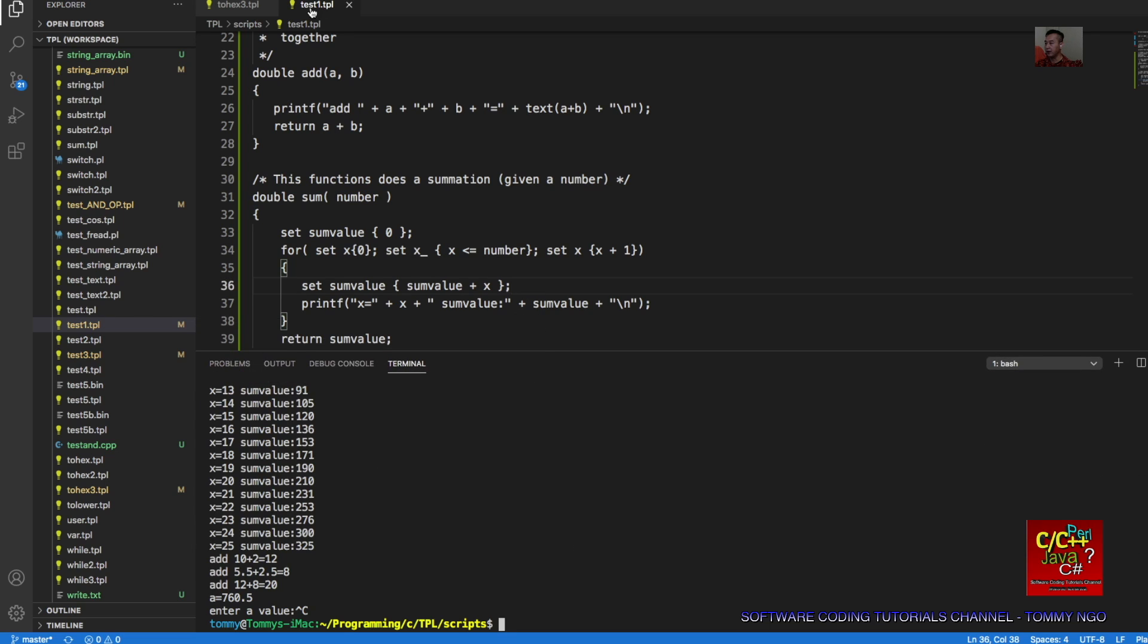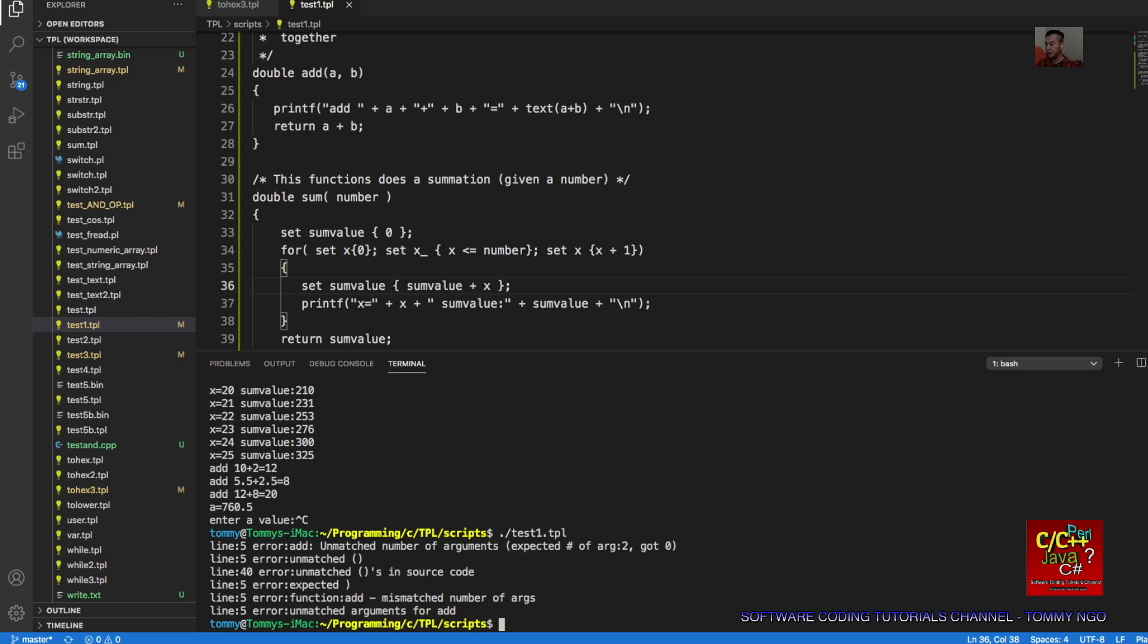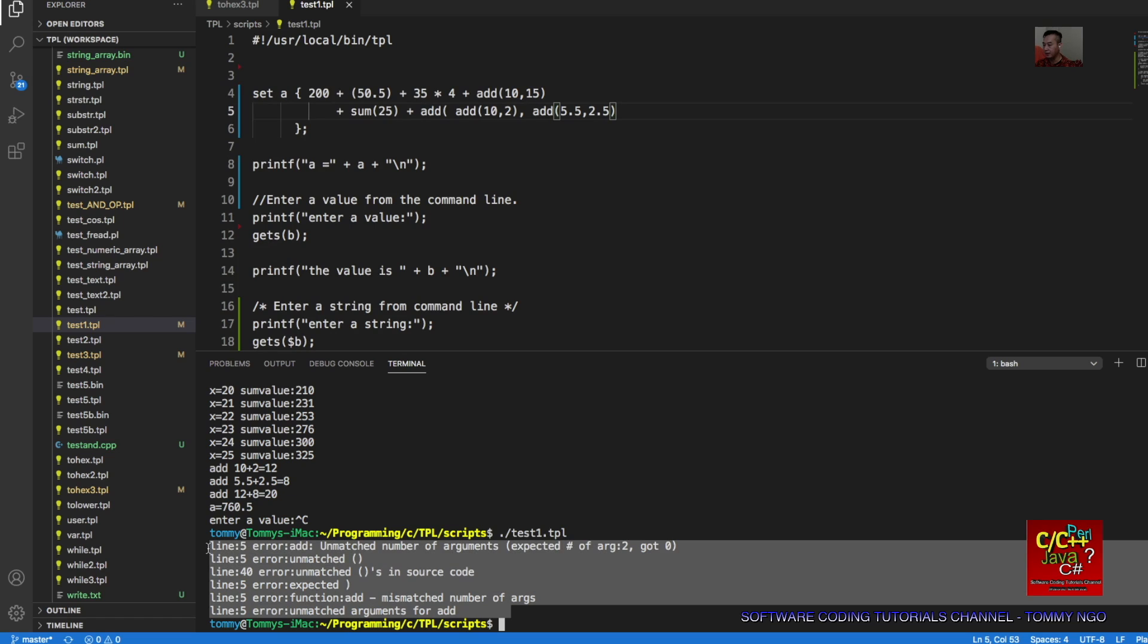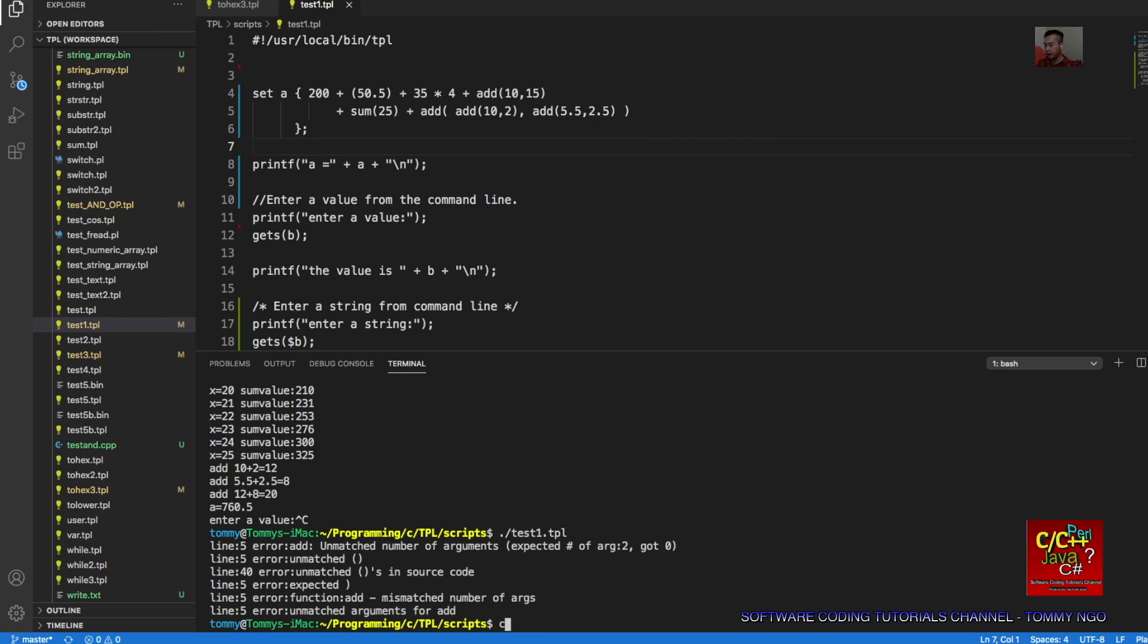I'll demonstrate for you from the terminal. The file is called test1.tpl. You can just type in test1.tpl. Oops, I have an issue. What's the issue there? It looks like I might have dropped a parenthesis here. You can see that there are checks in place. It looks like I'm missing a parenthesis here. Let me save and then clear.